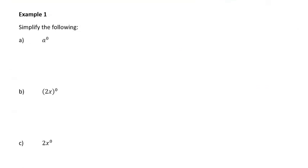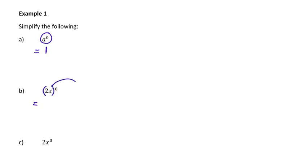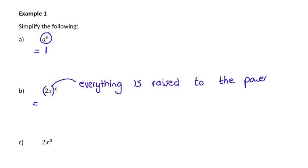Once you've written that all down, let's go through a whole bunch of examples, which I also expect you to write down in your notebook. Example number 1 says simplify the following. Question A says a to the power of 0 — well, anything to the power of 0 is 1. I'm not saying the exponent is 1; the whole thing disappears to 1. Now question B: 2x in a bracket to the power of 0. Because it's in the bracket, everything is raised to the power of 0, and because everything is raised to the power of 0, that whole thing collapses to 1.